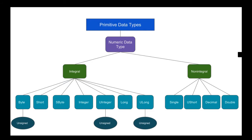The non-integral numeric data types represent numbers with both integer and fractional parts. The Single holds 4 bytes of memory allocation and covers a large range including negative values. The Decimal is also one of the most commonly used types and is usually used for money values.